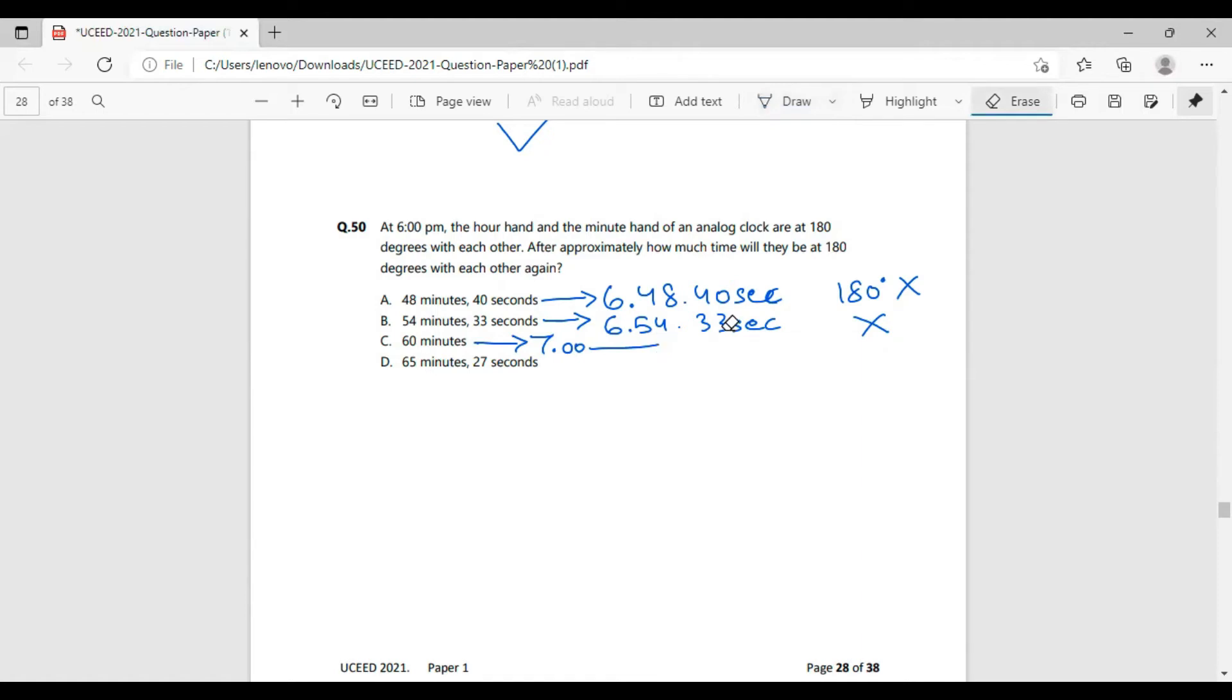Lastly, 65 minutes and 27 seconds afterwards 6 p.m. It means 7 o'clock and 5 minutes 27 seconds. In this case, if we look at the clock, it is quite visible that the hour hand and the minute hand represent a 180 degree angle between them.